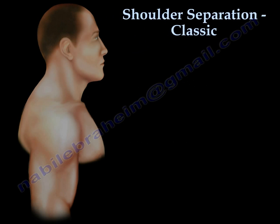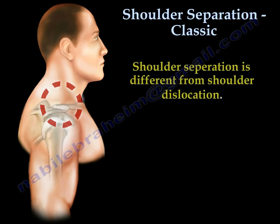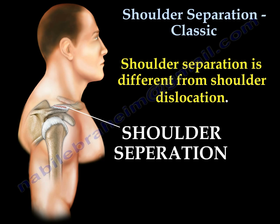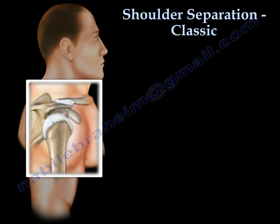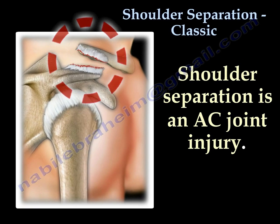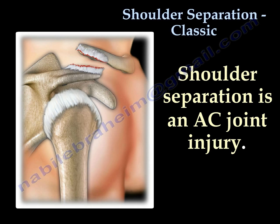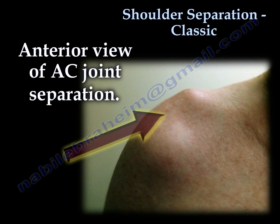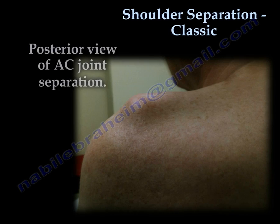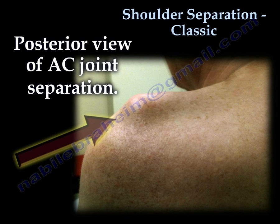Shoulder separation is different from shoulder dislocation. Shoulder separation is an AC joint injury — an acromioclavicular joint injury. This is a picture from the front that shows shoulder separation, and this is a classic picture from the back showing the shoulder separation.